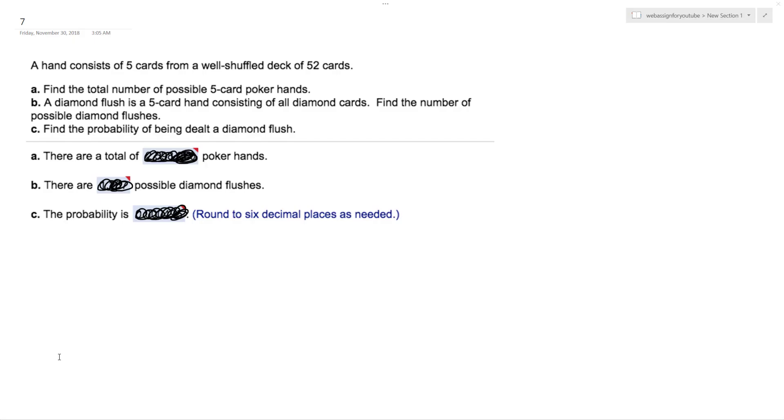Alright, so we have a hand that consists of five cards from a well-shuffled deck of 52 cards. So five cards, poker. We want to know what's the total number of possible combinations. So it doesn't matter how you hold them in your hand, it just matters which combination you get. And it doesn't matter how they're dealt to you.